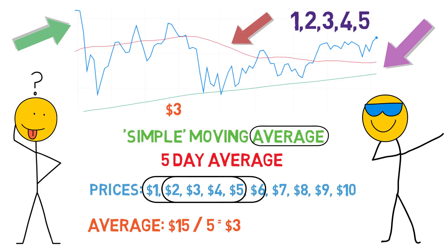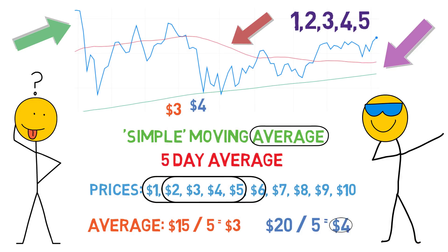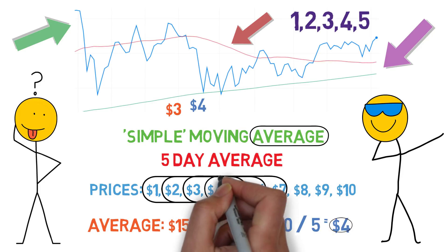On the day after, we cut off the previous day's price and add the new day. 2 plus 3, plus 4, plus 5, plus 6, is 20. Dividing by 5 for the average, we get 4. The second point of our 5-day simple moving average is 4.